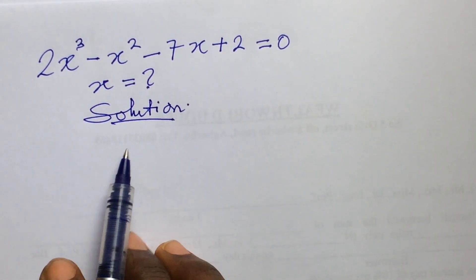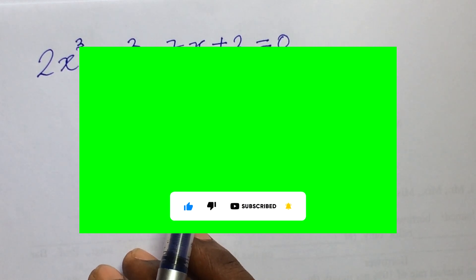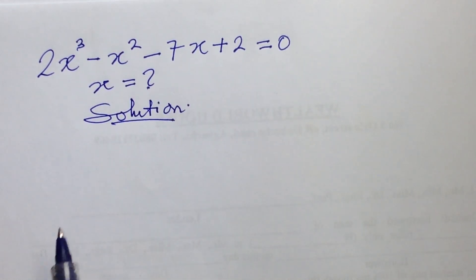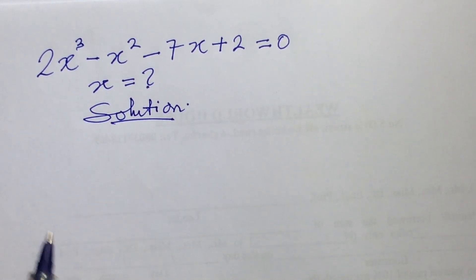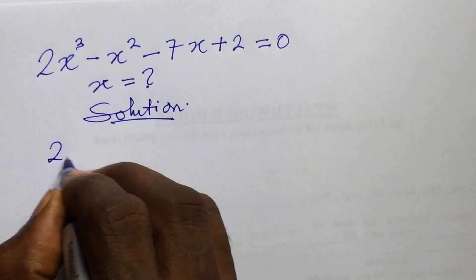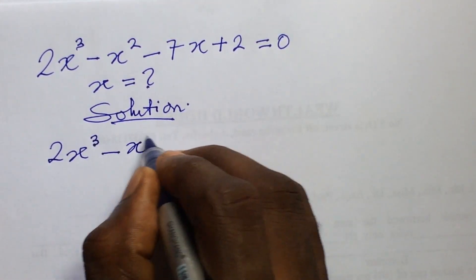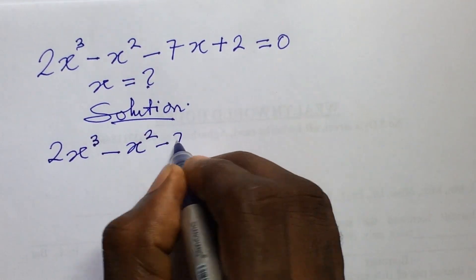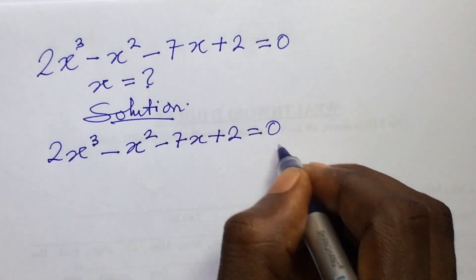Before we go into this challenge, if you are new to this channel, kindly subscribe and turn on the bell notification button so that you get notified whenever we drop a new video — because at Online Maths TV we drop new videos every day. So let's pull down our question: 2x³ - x² - 7x + 2 = 0.